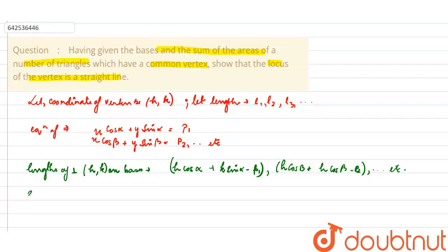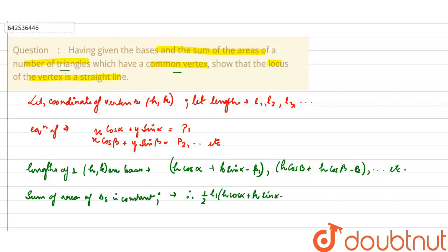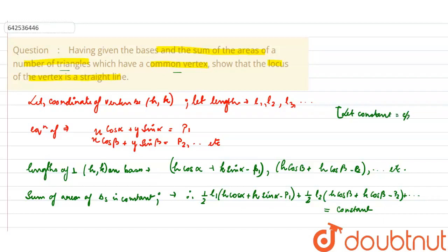Now, we will therefore say that the sum of the areas of the triangles is constant. It is being said that the sum of the areas of a number of triangles which have a common vertex is constant. So, we can write: half l1 (h cos alpha plus k sin alpha minus p1) plus half l2 (h cos beta plus k sin beta minus p2) plus and so on, and this is equal to a constant. Let us consider the constant to be c by 2.